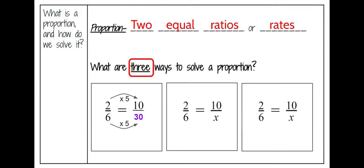Let's look at the middle example. We could also look vertically, which is unit rate. To get from 2 to 6, we would be multiplying by 3. So if we do the same thing to the other side, 10 times 3 would give us a value of 30 as well.